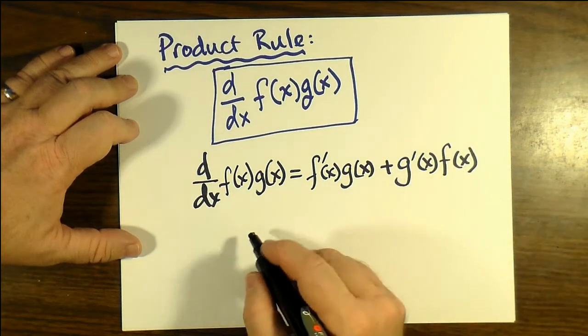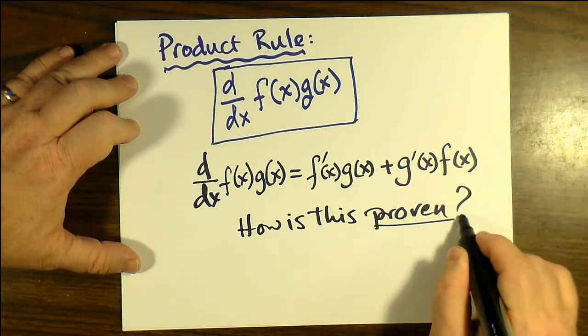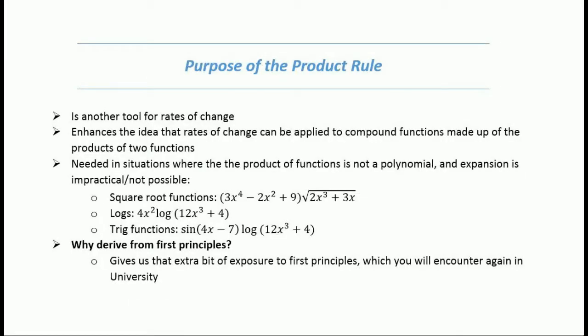The real question is how do we really go about proving this from first principles. Now one of the purposes of the product rule is to basically take any situation involving a product of two very different functions and show that when you combine it into a single function, it itself can have a rate of change. This will be most useful in situations where you don't have polynomials, but you might have logarithms or sine and cosine or anything like that. For purposes of derivation, well it basically gives us just that little bit more of experience, a little bit more exposure to deriving our own differentiating formulas.